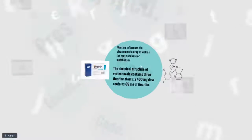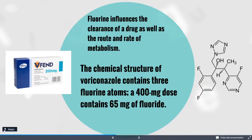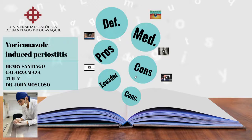The cons about this drug: fluorine influences the clearance of the drug as well as the route and rate of metabolism. The chemical structure of voriconazole contains three fluorine atoms, and a 400 mg dose contains 65 mg of fluorine. That is the reason it can produce periostitis.